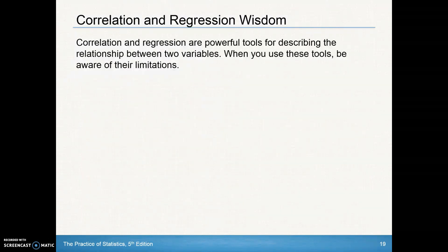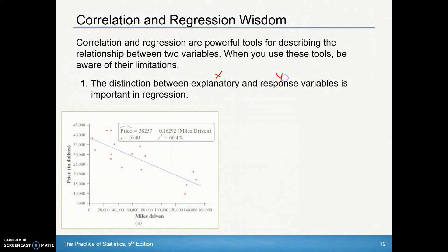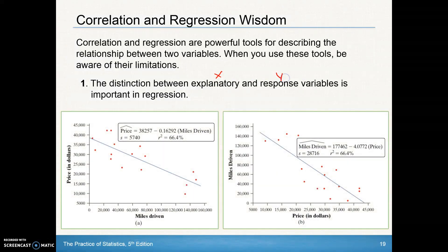Now let's talk a little bit about correlation and regression wisdom. They're very powerful tools for describing a relationship between two variables. And when you use these tools, be aware of their limitations. The first limitation is the distinction between explanatory, or in other words, the x values, and the response variables, which are the y values, is important in regression. It does make a difference in the equation that we will write.